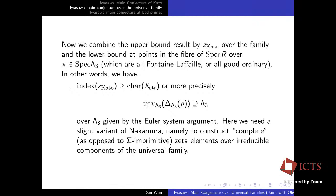We can combine the upper bound by Euler system over the family and the lower bound at the chosen point X to prove the Iwasawa conjecture over the family. More precisely, the trivialization map maps the fundamental line into the integral lattice Λ₃. We slightly generalize Nakamura's construction — we have to construct a complete Euler system over universal irreducible components, since there is no way to construct the universal complete zeta element over the whole family.